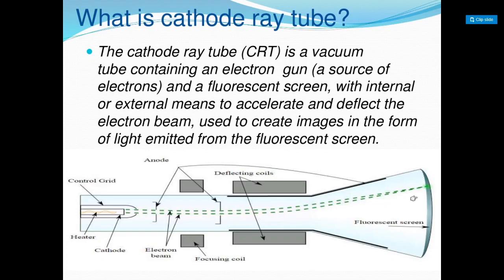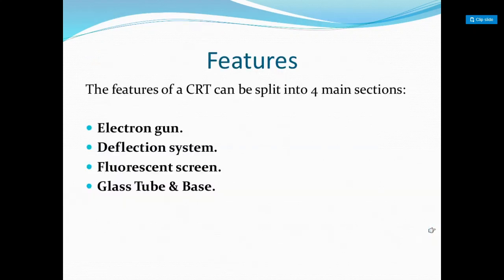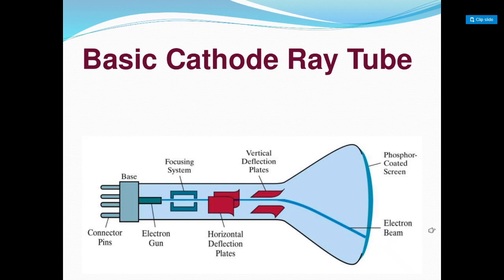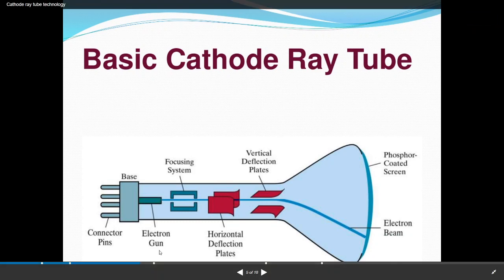Images form from top to bottom, which is why you can see pictures on the CRT monitor. The features of a CRT can be split into four main sections: electron gun, deflection system, fluorescent screen, glass tube, and base. Looking at the block diagram, there are connector pins at the base, and the electron gun is where the electrons originate. The focusing system decides where the electron beam should pass through.